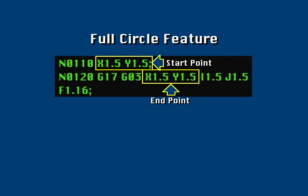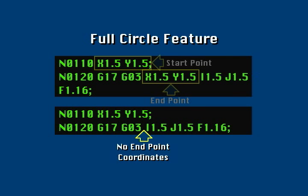When this occurs, you may find that the end point data is not present in the circular cut block. This is evidence that the end point is the same as the start point, and a full circle cut will be made.